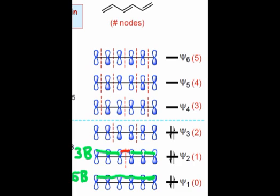In the third MO, we see three bonding interactions here, here, and here, and two antibonding interactions here and here.